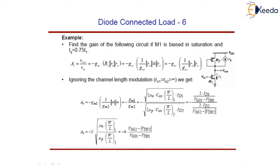The gain of the device, as seen in the previous lecture, is minus GM1 into 1 upon GM2 in parallel with RO2 and RO1. If we ignore the channel length modulation, RO1 equals RO2 equals infinity, and the voltage gain becomes minus GM1 upon GM2 in parallel with infinity.